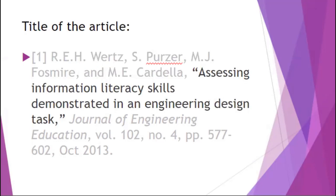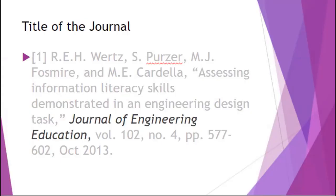After the authors comes the title of the article — the title that they wrote — and you put this in quotes. For example: "Assessing information literacy skills demonstrated in an engineering design task," followed by a comma and end quote. After the title of the article, you need to include the title of the journal — that is the journal that published the article. In this case it's the Journal of Engineering Education, with a comma after it. Make sure that the title of the journal is in italics.